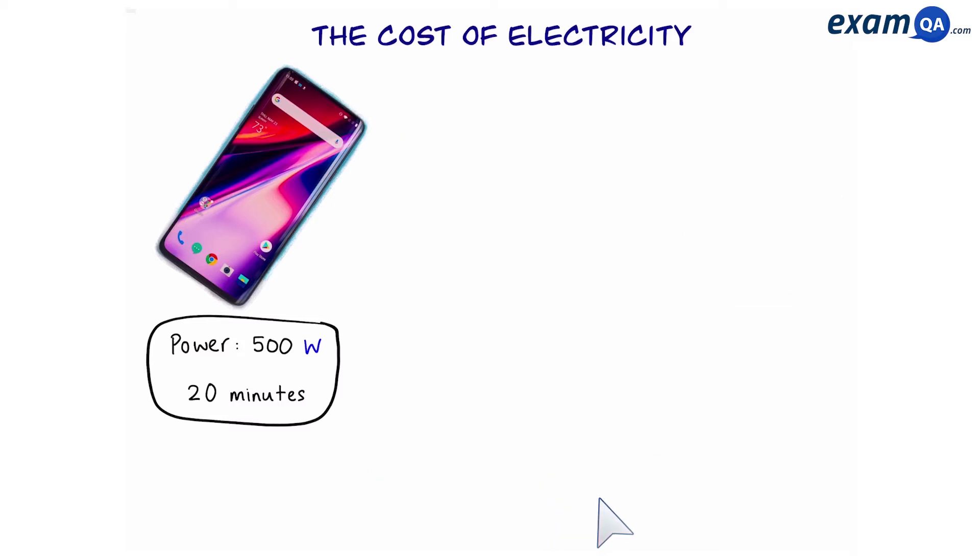Let's start with the phone. We know that the power is 500 watts which means the phone uses 500 joules per second. But we're not using it for one second, we're using it for 20 minutes. So let's work out how many seconds there are in 20 minutes. To convert from minutes to seconds we times it by 60. That gives us 1200 seconds.